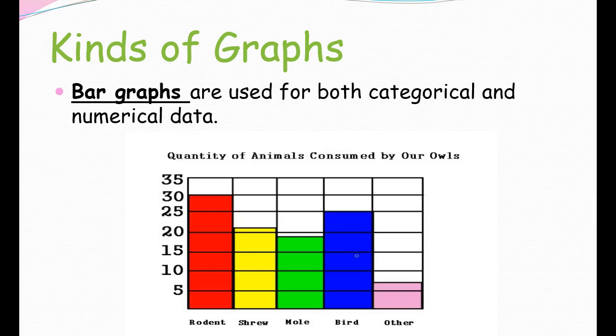The second kind of graph is bar graphs. This is for both categorical and numerical data, meaning you can use bar graphs for both quantitative and qualitative data. Our graph here is pretty easy: quantity of animals consumed by owls. The different types, that's what's changing, still goes on the x-axis. What responds to the type of animal is how what the owls ate. If you see, owls mostly eat rodents.